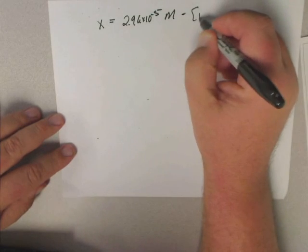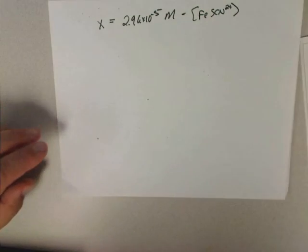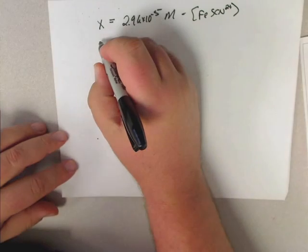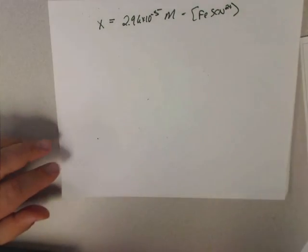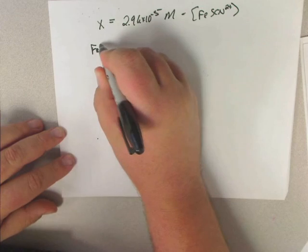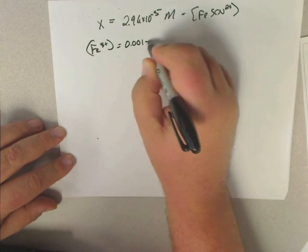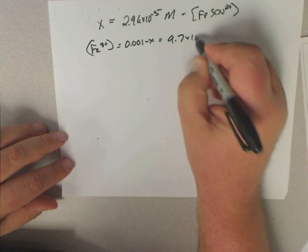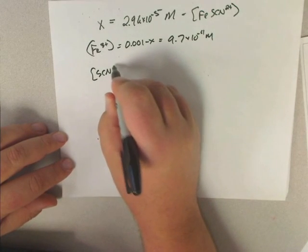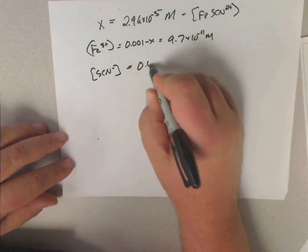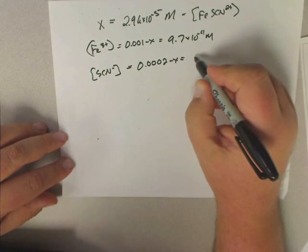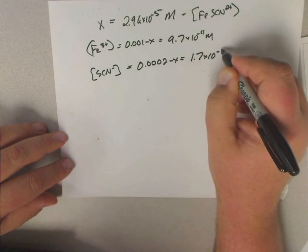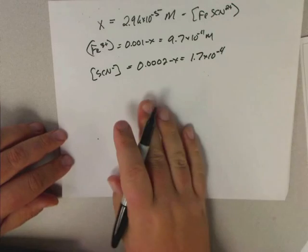That is equal to the iron thiocyanate concentration. If we know X, then we can put that into all of the other ones and get our answer. We know that iron equals 0.001 minus X, so that's going to equal 9.7 times 10 to the minus 4th molar. And the SCN from that is 0.0002 minus X, so that's going to equal 1.7 times 10 to the minus 4th.